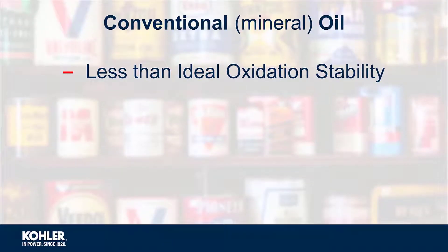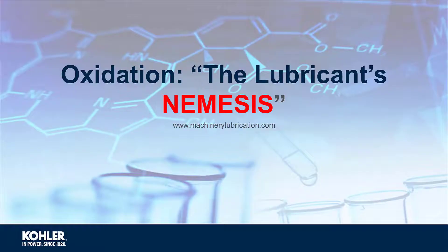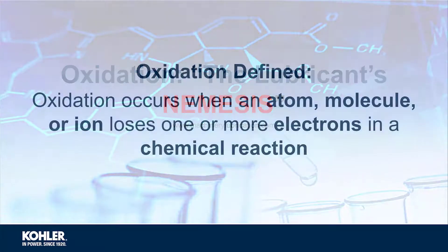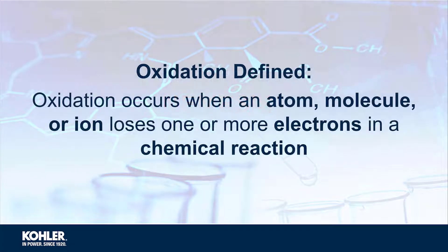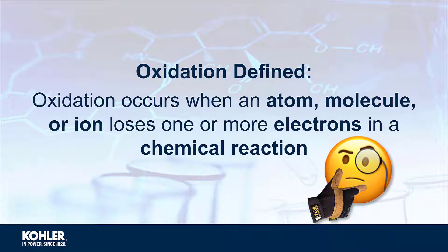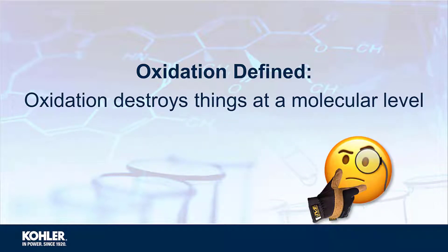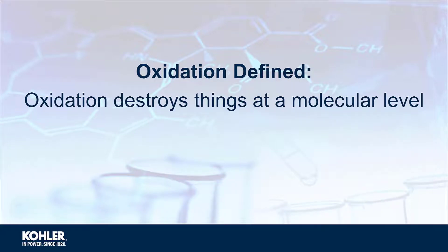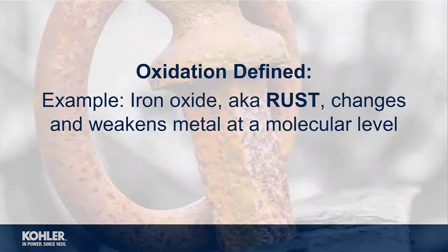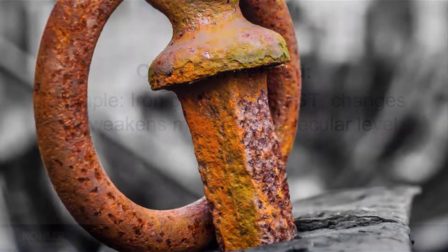Conventional mineral oil does have weaknesses, and one of those is less than ideal oxidation stability. Oxidation is considered the lubricant's nemesis. Oxidation occurs when an atom, molecule, or ion loses one or more electrons in a chemical reaction. This is a complicated but accurate way of saying oxidation destroys things at a molecular level. We've all likely witnessed iron oxide, or rust, completely destroy something metal when given enough time.